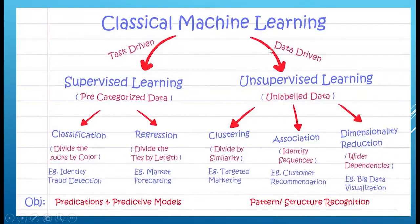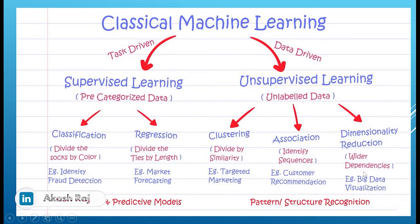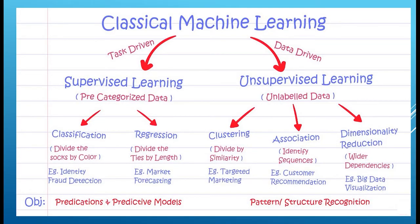When classical machine learning is data-driven, you use unsupervised learning for unlabeled data. Clustering can be used for targeted marketing. Association can be used for customer recommendations and market and retail analysis. Then there is dimensionality reduction — when you have many features, like 50 or 100, you want to reduce the dimensions so that your machine learning algorithm works faster. You can use techniques like PCA for dimensionality reduction.